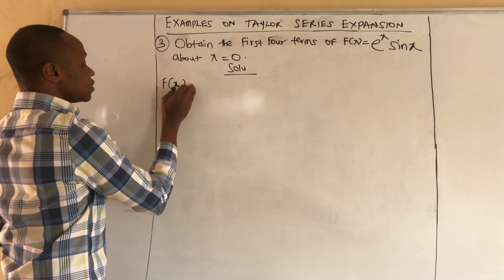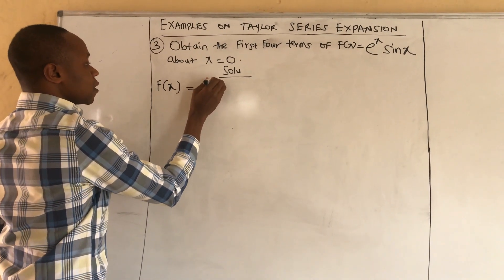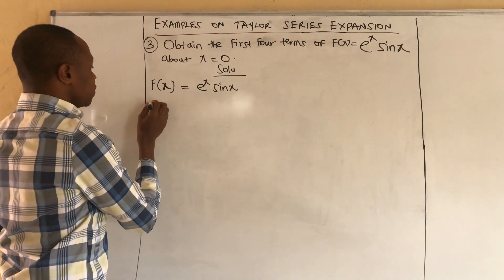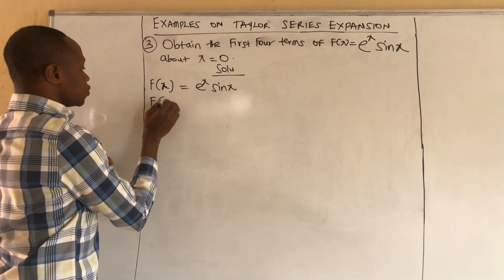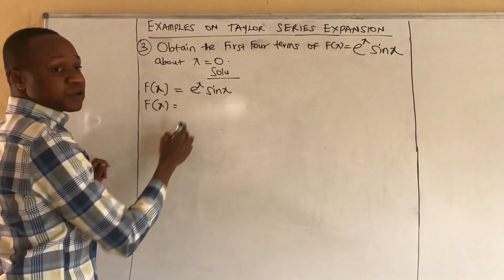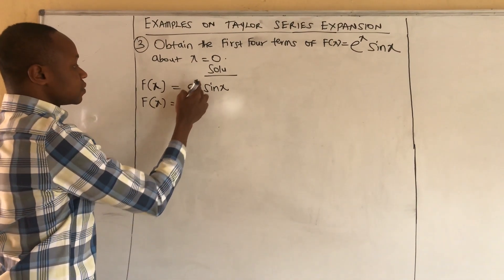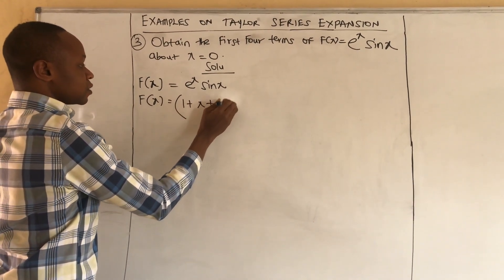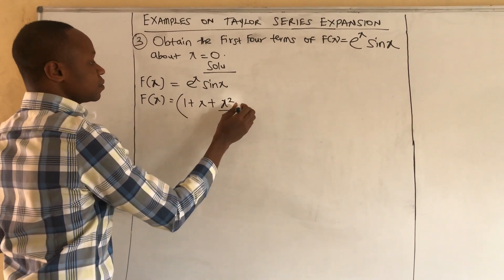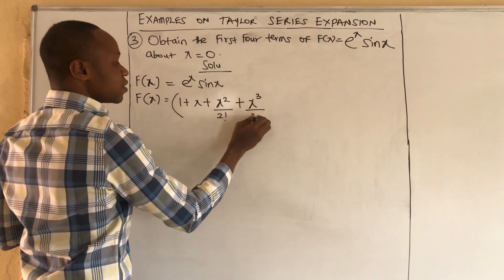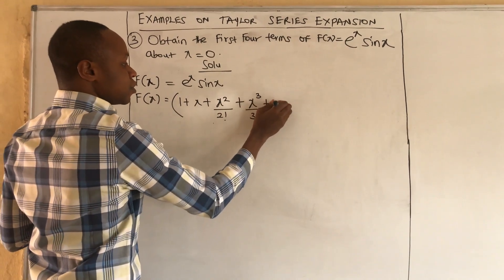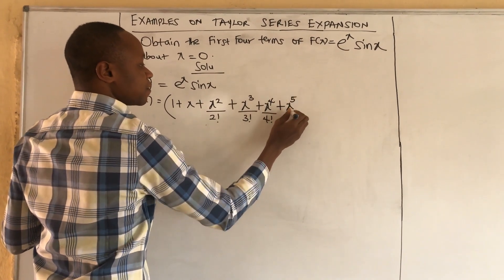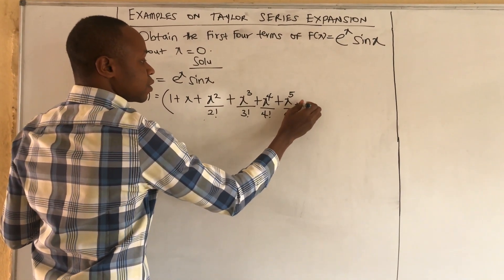We already know the Taylor series for exponential x, and we already know the Taylor series for sine x. So if you are asked to expand exponential x times sine x, recall that exponential x is: 1 + x + x²/2! + x³/3! + x⁴/4! + x⁵/5! plus other terms.